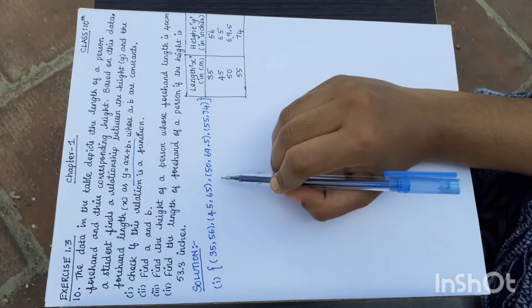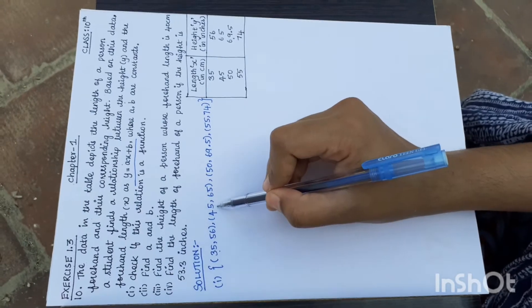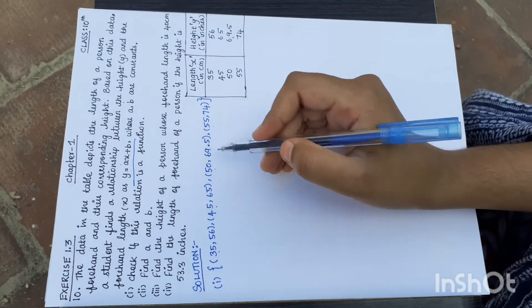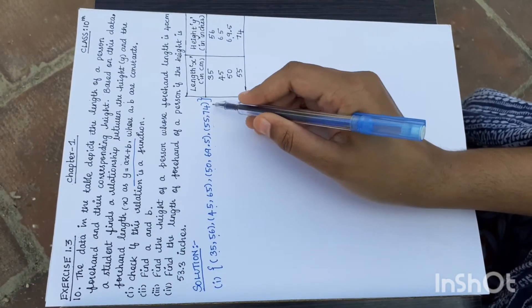To check if this is a function, we can see that the x values are 35, 45, 50, 55. There are no repeated elements, all elements are unique in x. The y values are 56, 65, 69.5, 74.